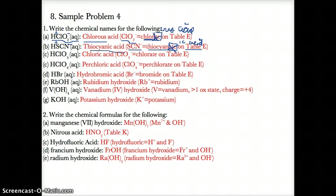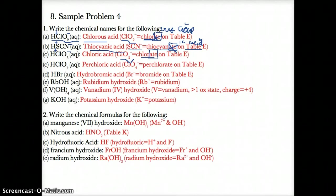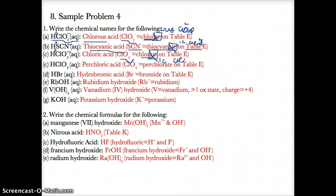For HClO3, breaking it apart: H+ followed by ClO3- to balance it. ClO3- is chlorate on table E, with an -ATE ending for the polyatomic ion. Cross out the -ATE and replace with -IC acid based on our rules. So HClO3 is named chloric acid, where -IC acid indicates the polyatomic ion ClO3- has an -ATE ending.